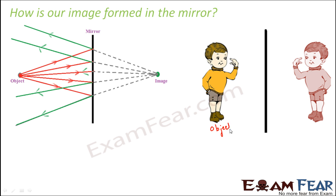We are all illuminated objects. When light falls on our body, we are able to reflect that light. So light from our body falls on the mirror. As you can see, the red lines represent the rays falling from our body to the mirror.